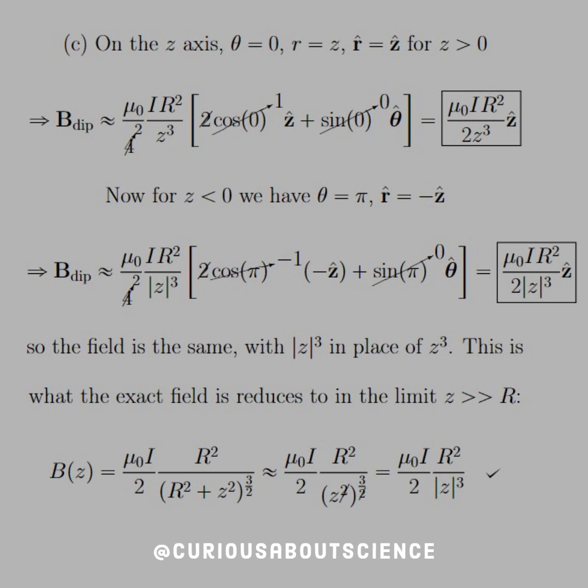Right, theta equals 0 yields cosine going to 1 and sine going to 0 so we also substitute in z hat for R hat but notice that the coefficient of 2 on the cosine cancels with the 1 over 4 in the denominator on the coefficient outside of the bracket. So in general we're left with mu naught I R squared divided by 2 z cubed in the z hat direction. That looks pretty familiar.